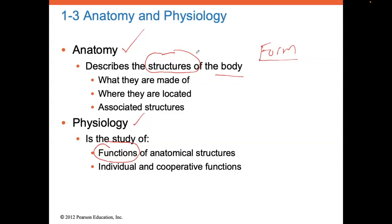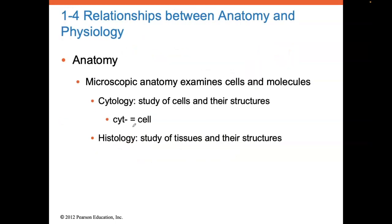In anatomy and physiology, we say structure determines function. The way something is structured or designed helps determine how it's going to function. For example, the knee can flex and extend because it works like a hinge, like the hinge of a doorway opening and closing. But the shoulder joint is like a ball and socket, so it can move in a variety of directions because it's structured differently — it functions differently.